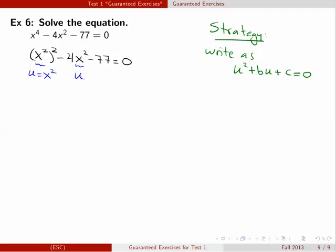So replace this parenthesis with u, this becomes u squared, and so for every x squared that you see you replace that with u. Then we have this new equation with u that we can solve by factoring.